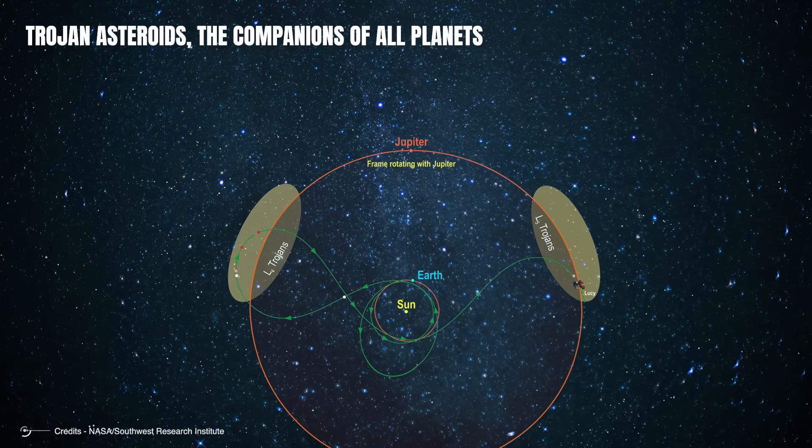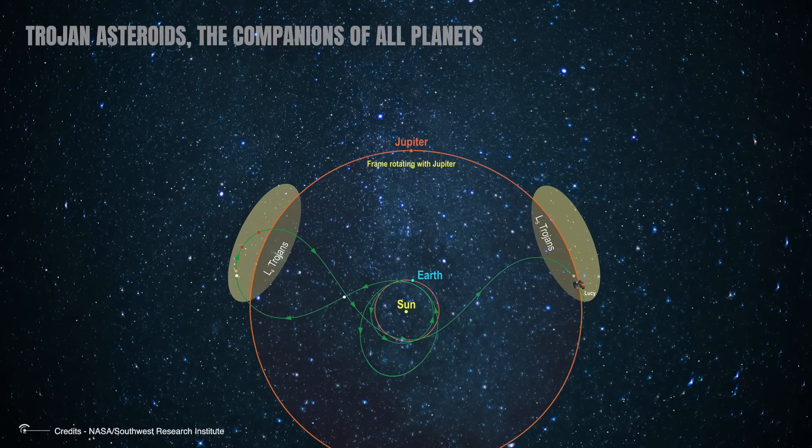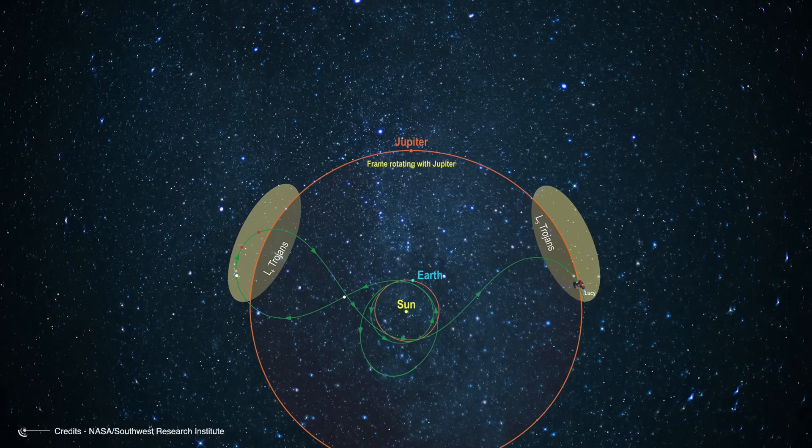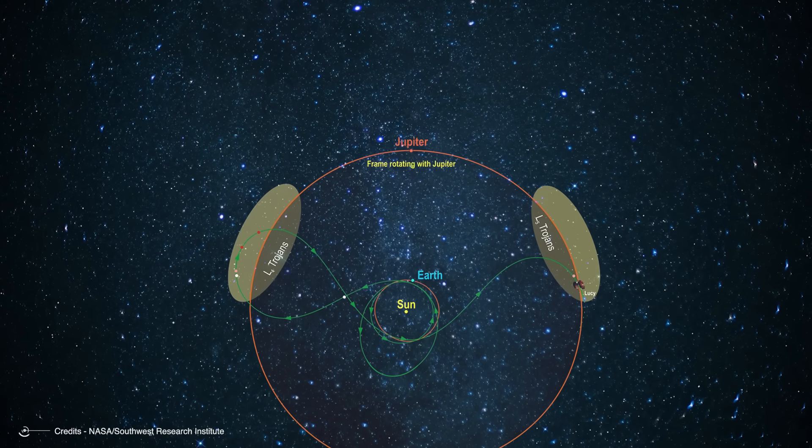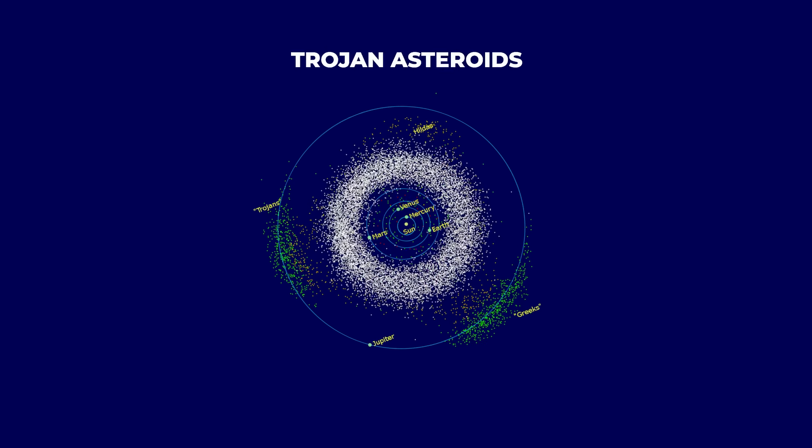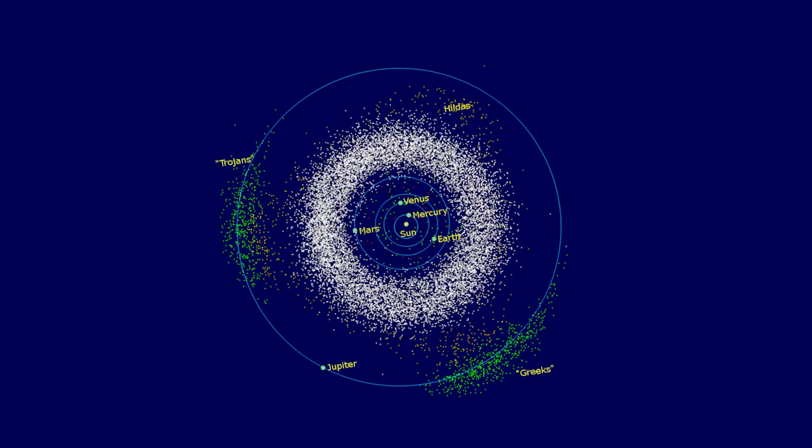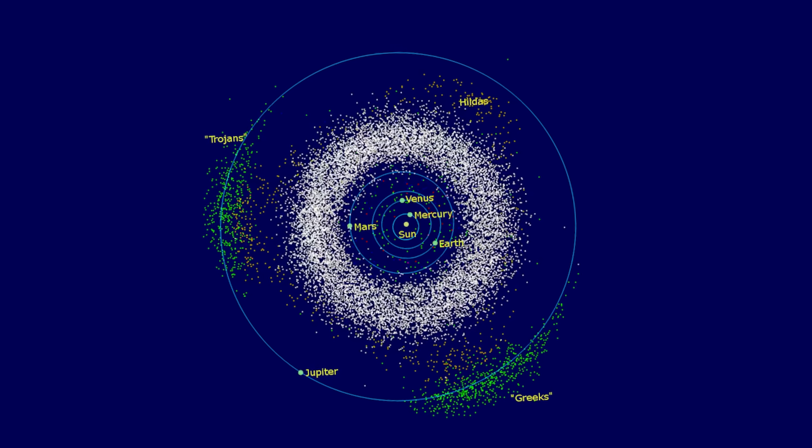Trojan asteroids, the companions of all planets. Did you know that there are asteroids that travel alongside planets without colliding with them? These are the Trojan asteroids, celestial companions that share a planet's orbit and are kept in stable positions thanks to a unique gravitational balance.